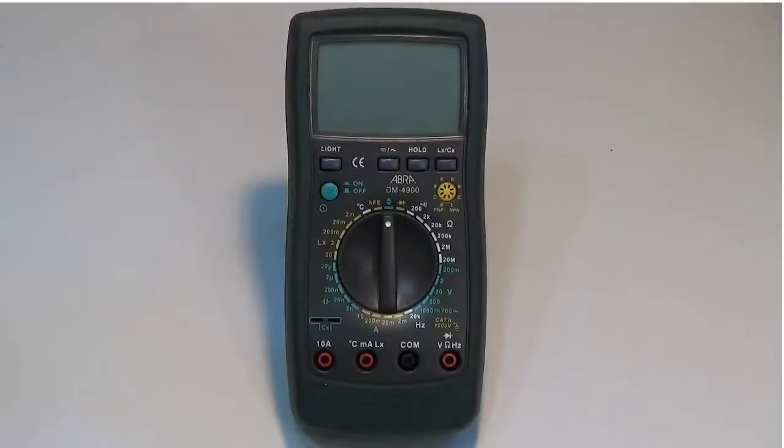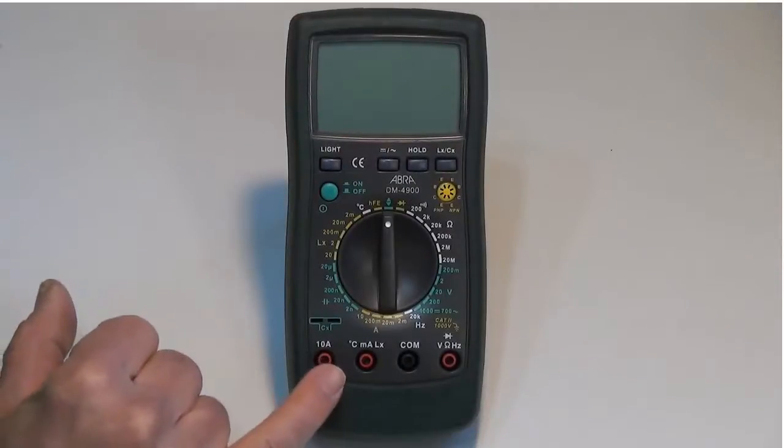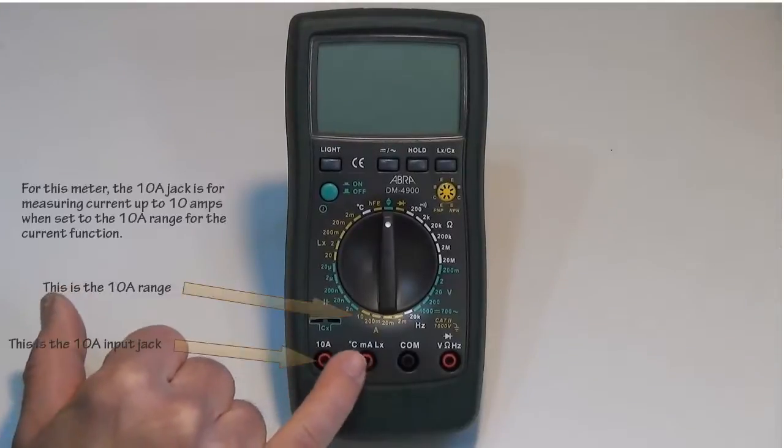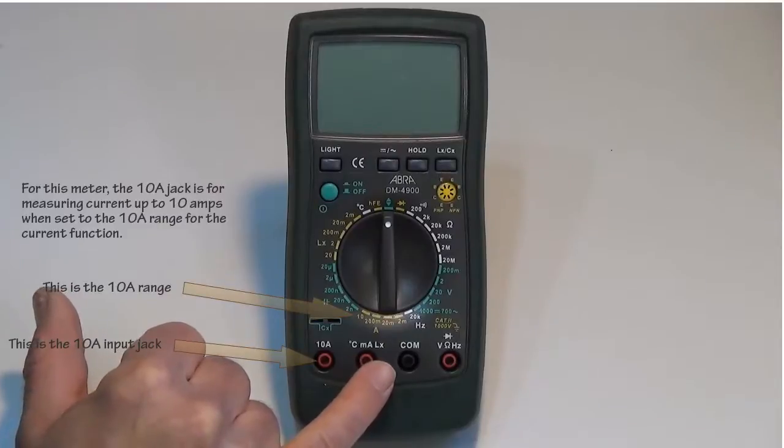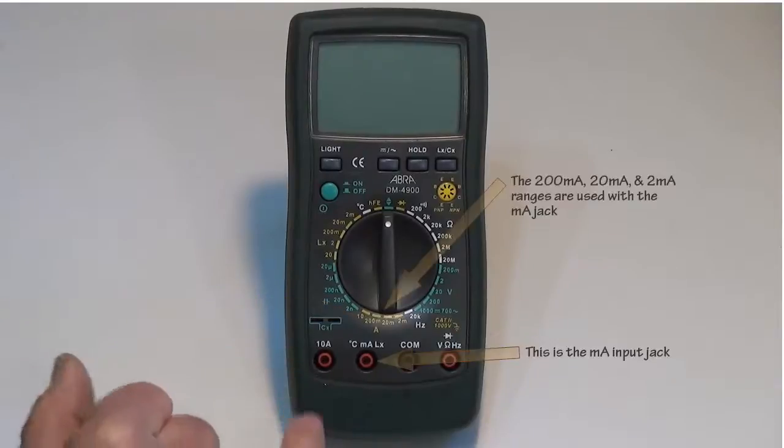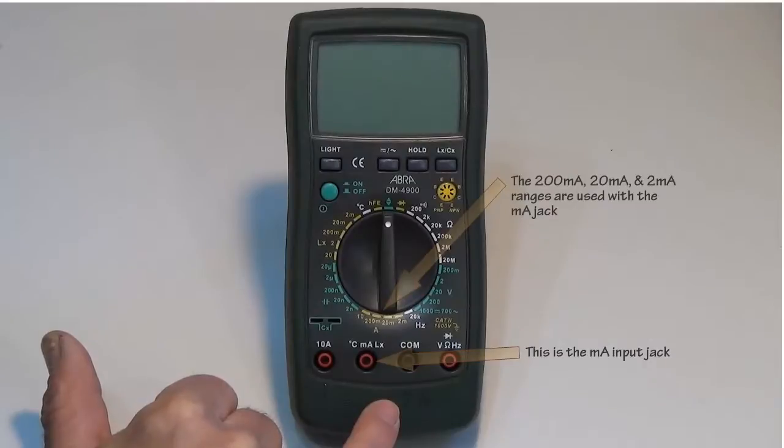This particular meter is fused on the 10 amp function and also for the temperature, milliamp function and inductance function. So these two jacks are fused and you can see that by these bottom symbols here. They show that they're fused on the jack here to the common.